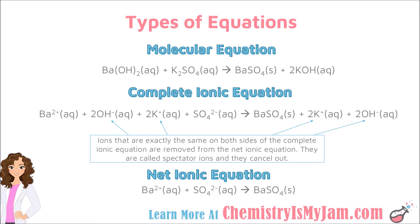The number of ions present is also reflected. There were two hydroxide ions for every one barium ion, so there are two hydroxide ions in the equation — the subscript becomes a coefficient. Potassium sulfate was also aqueous, so in the complete ionic equation it shows up as two potassium ions and one sulfate ion. Barium sulfate is our solid — in a complete ionic equation, solids stay together. Potassium hydroxide is aqueous, so it is broken apart into its ions, and the reaction must remain balanced.